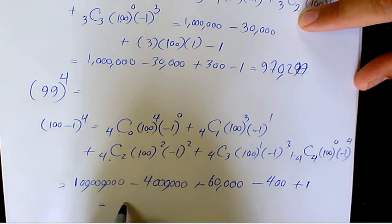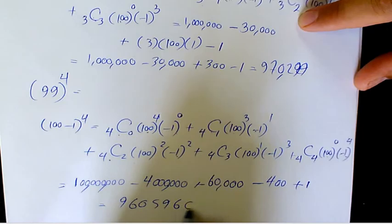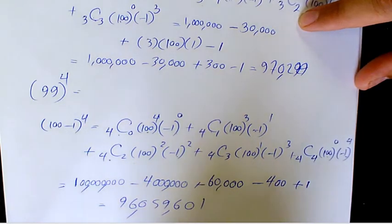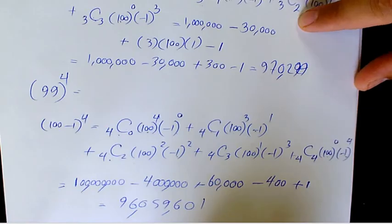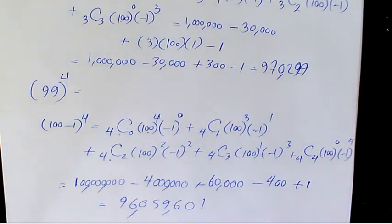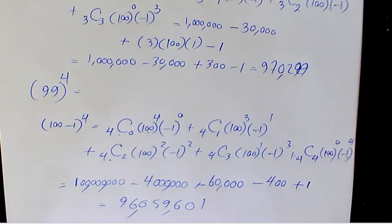The answer is 96,059,601. That's how we find the value of 99 to the power of 4 and 99 to the power of 3 using binomial expansion. I hope you enjoyed this video — please leave a comment if you have any questions. Thank you for watching and have a great day.